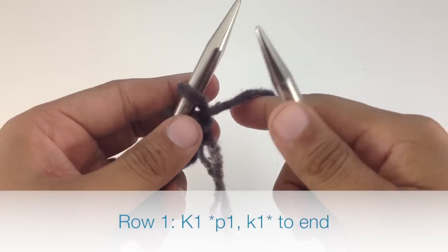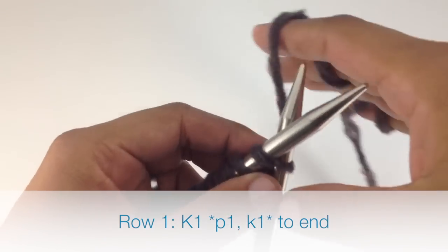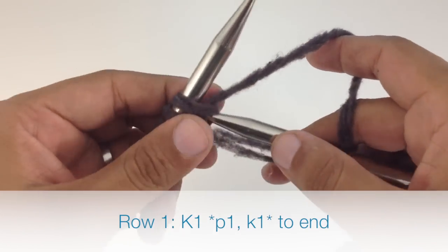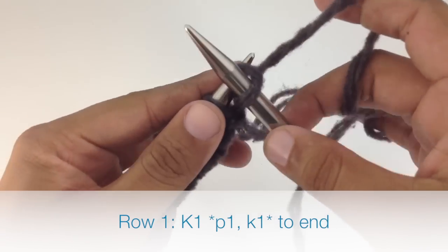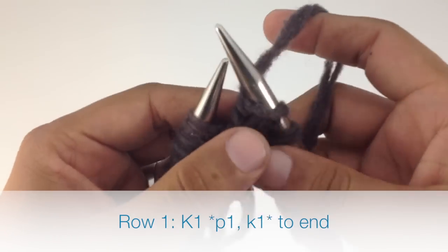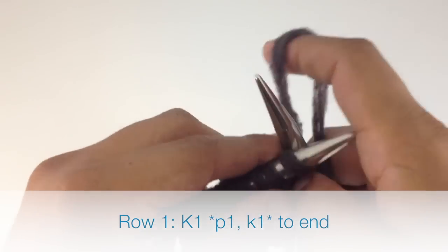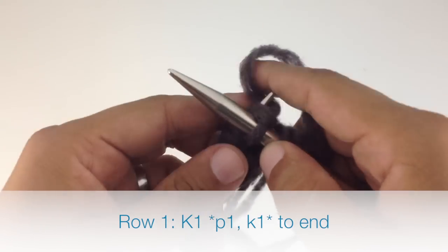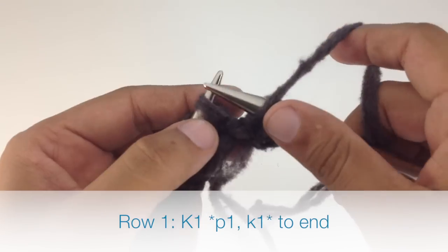Row one: Begin by knitting one, then start the repeat by purling one and finish the repeat by knitting one. Continue purling one and knitting one until the end of the row.